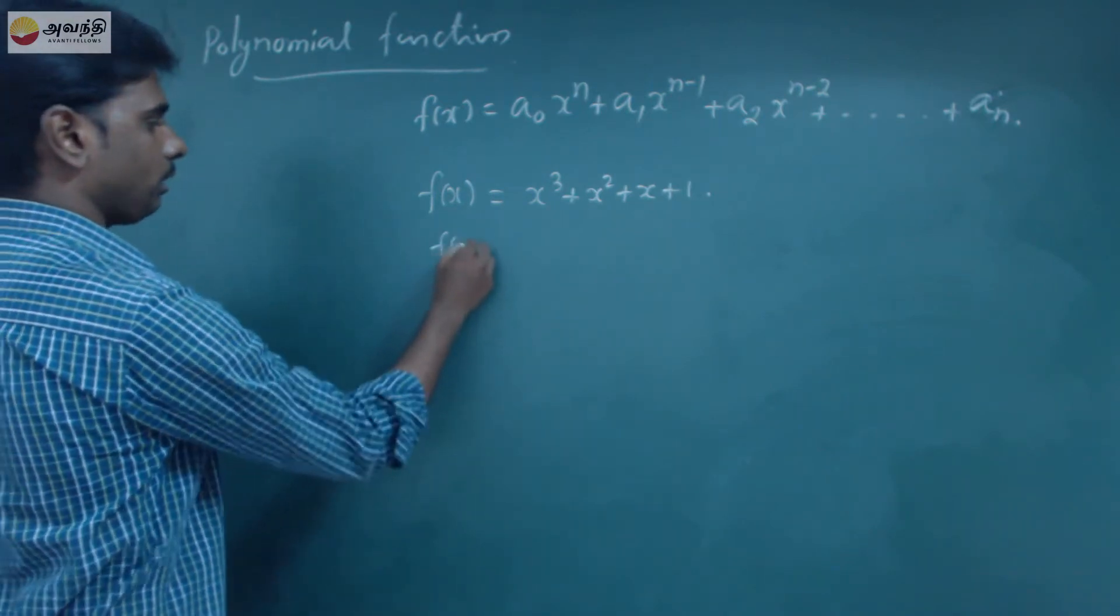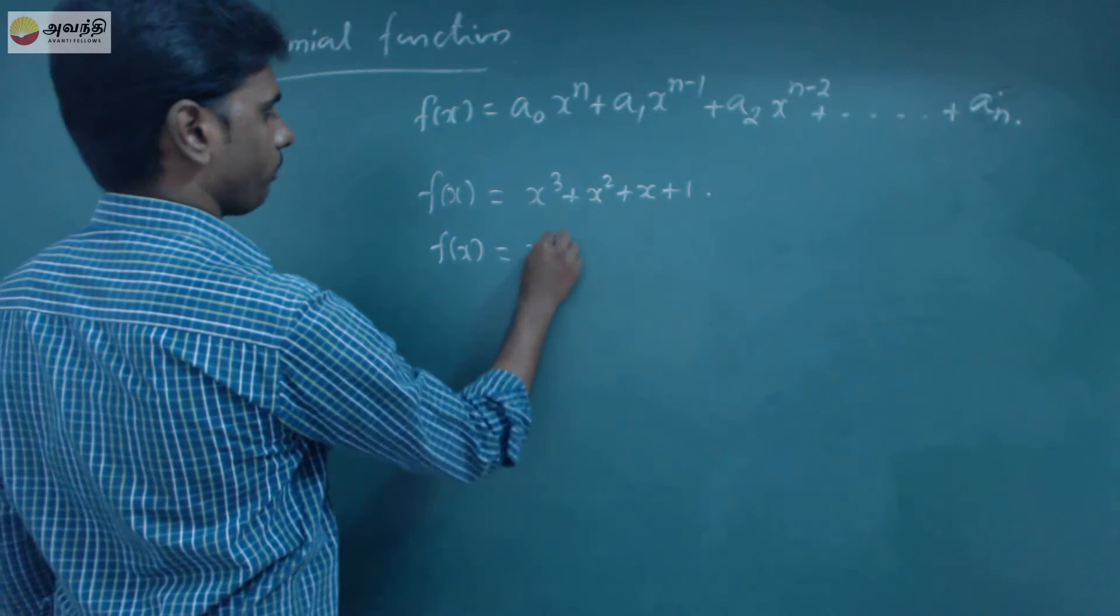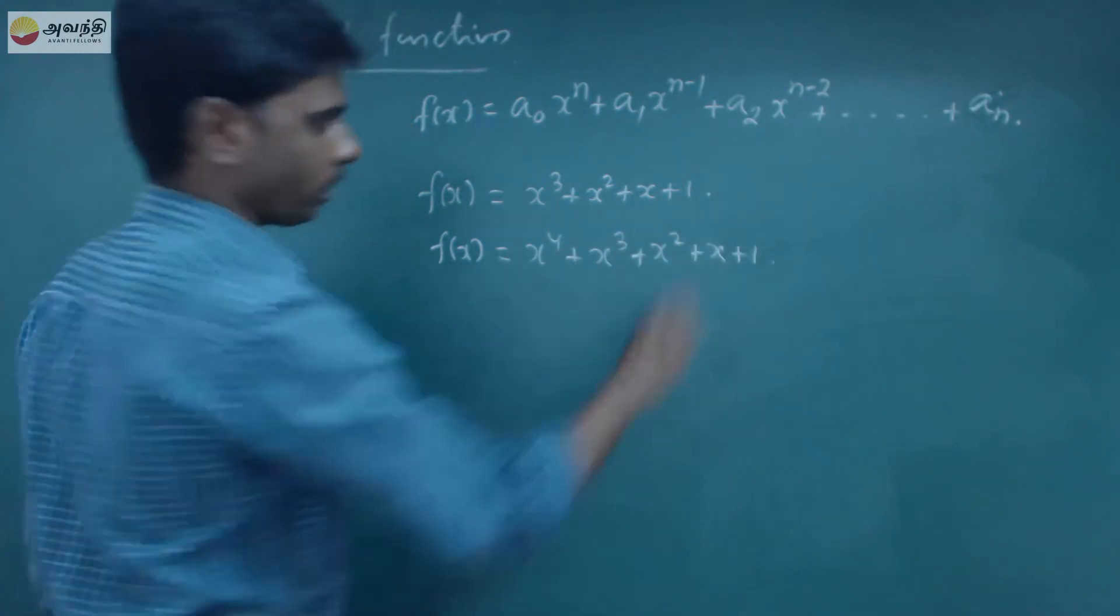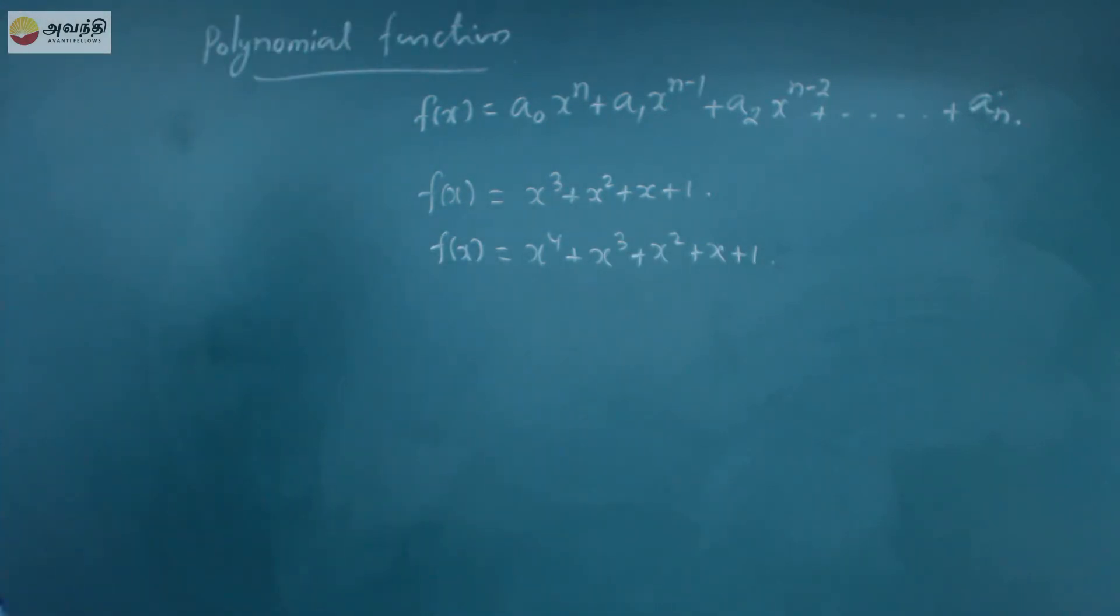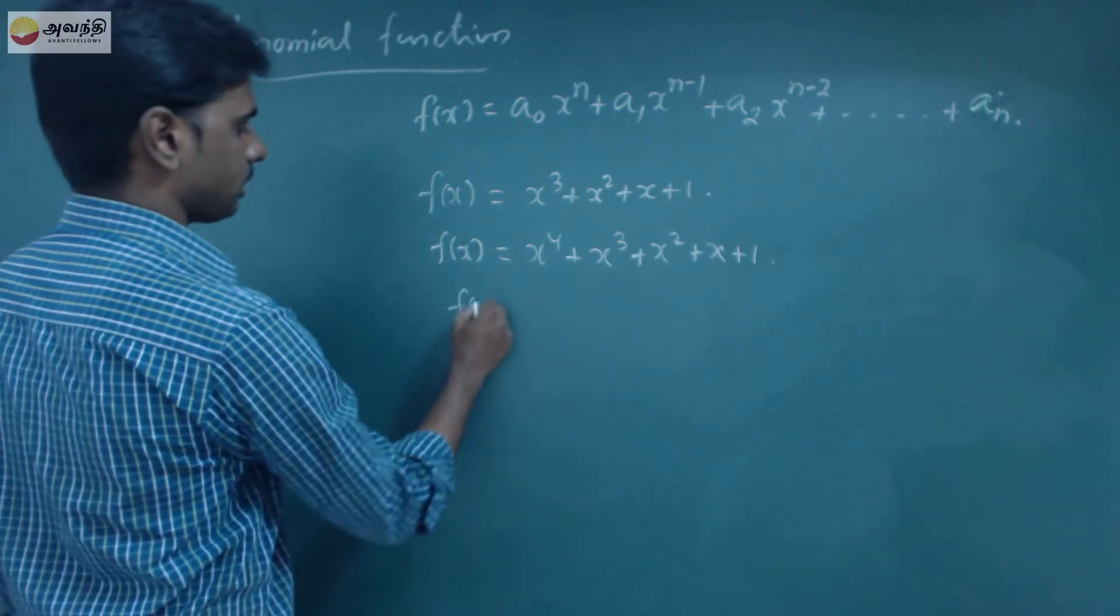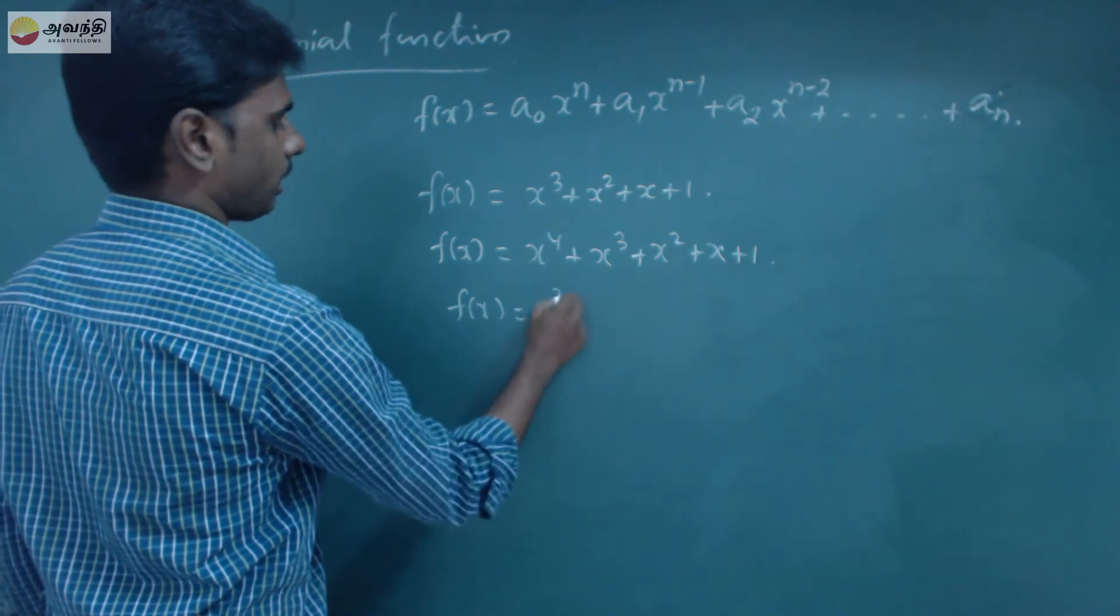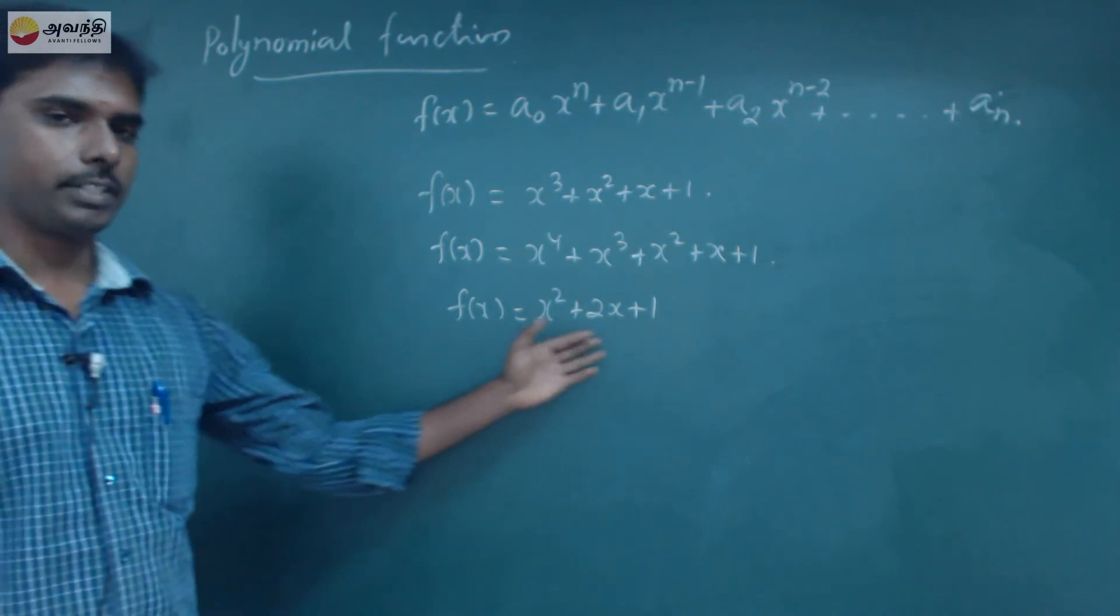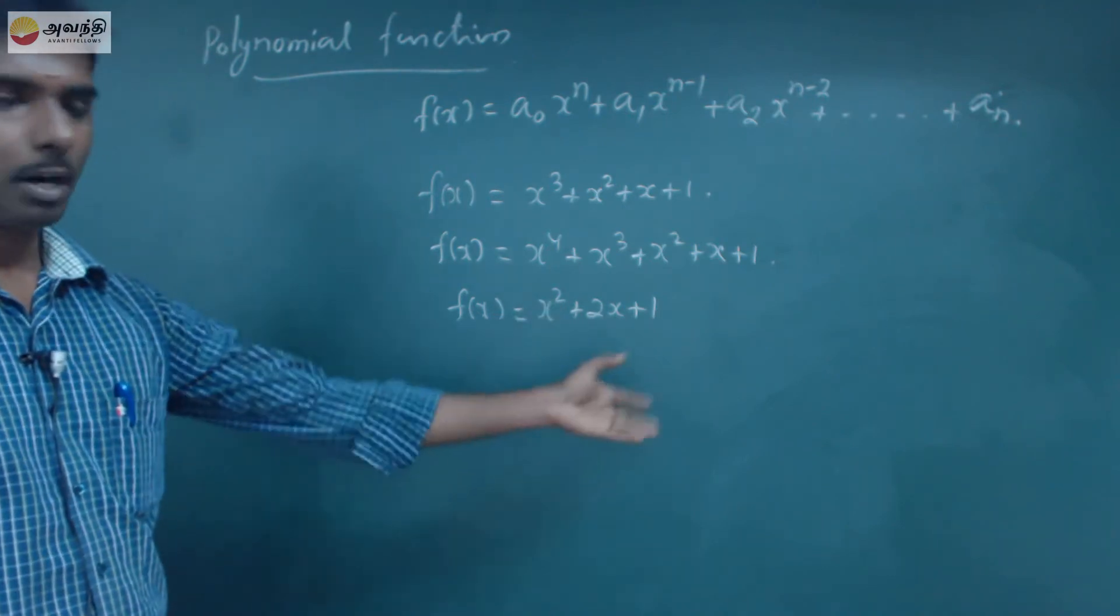x power n 4 plus x cube plus x square plus x plus 1. This is fourth degree polynomial. That is f of x is equal to x square plus 2x plus 1. This is quadratic equation. This is second degree polynomial.